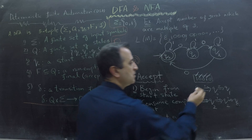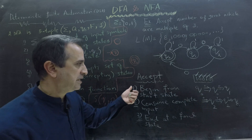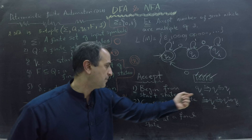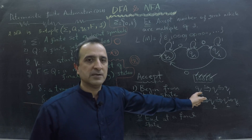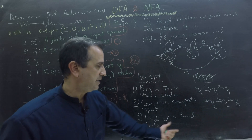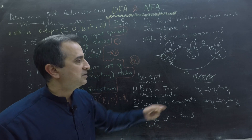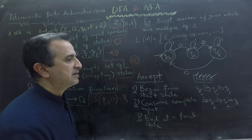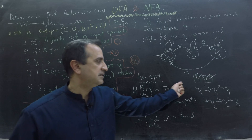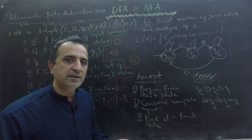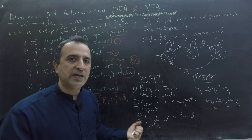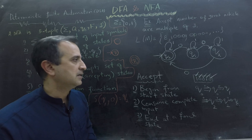I have consumed my input completely. Let's check the three rules: I began at the start state — yes; I consumed my input completely — yes; and I ended at the final state Q0 — yes. So this string is accepted. If my string had only two zeros, I would not have ended at the final state; I might have ended at Q1 or Q2, and so that string would be rejected.